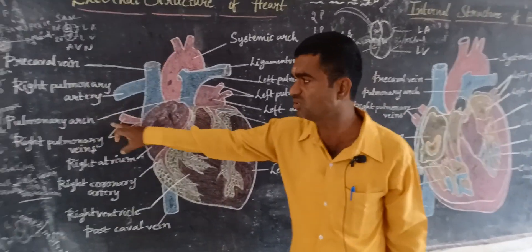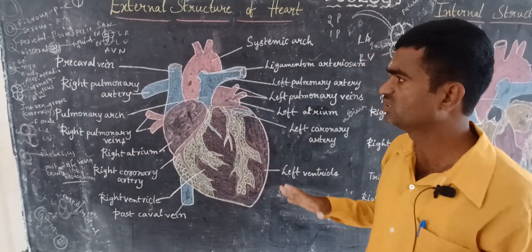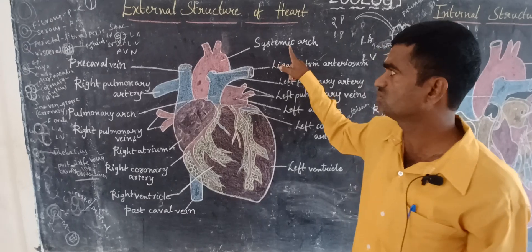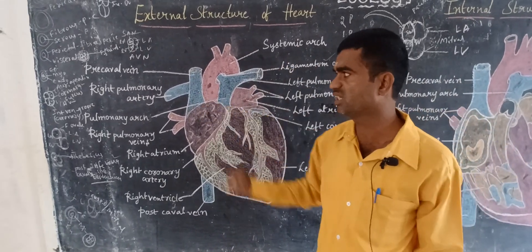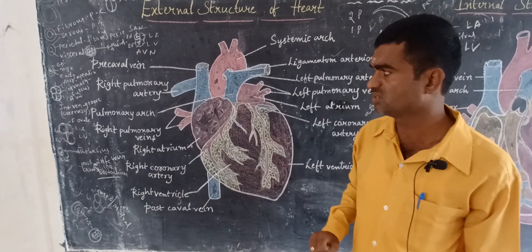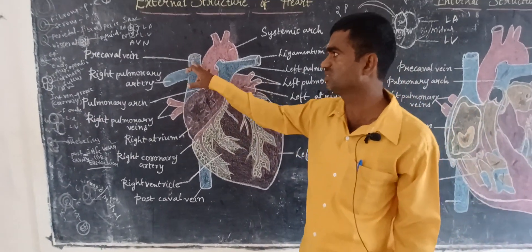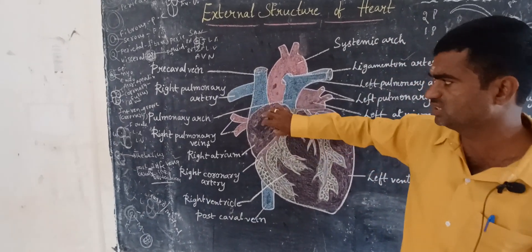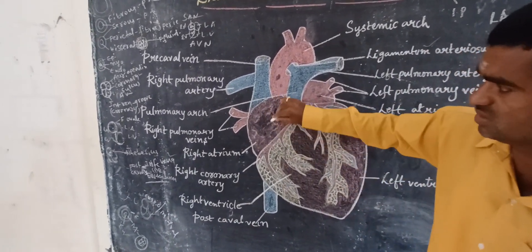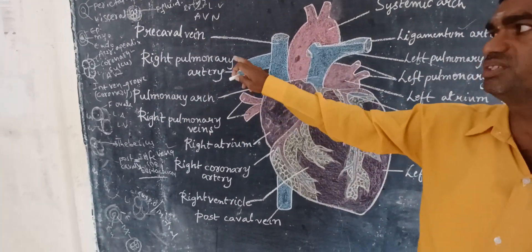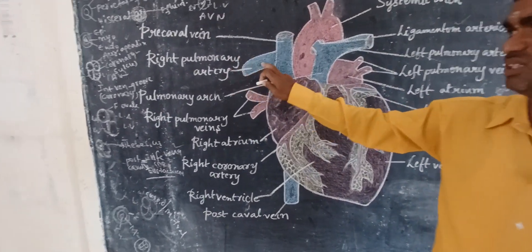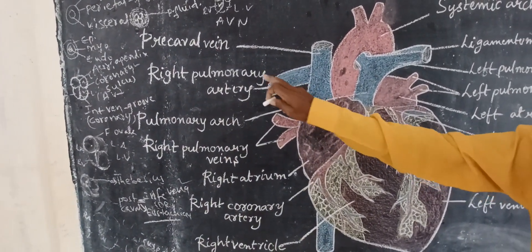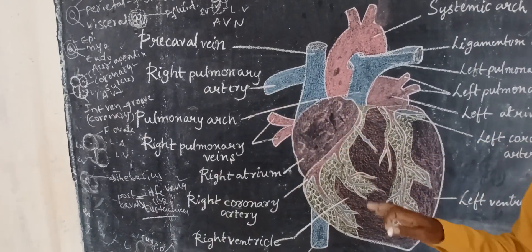Before going to the pulmonary arch and systemic arch: the systemic arch carries oxygenated blood, and the pulmonary arch carries deoxygenated blood. The precaval vein carries deoxygenated blood into the right atrium. The right pulmonary artery carries deoxygenated blood.